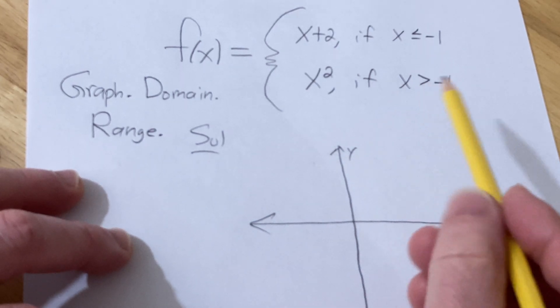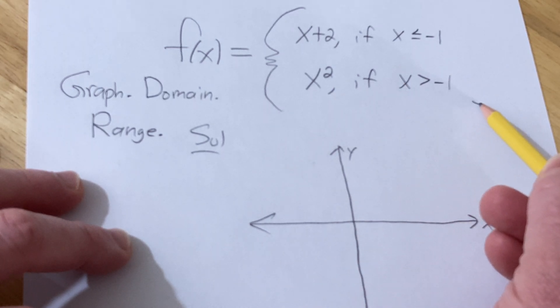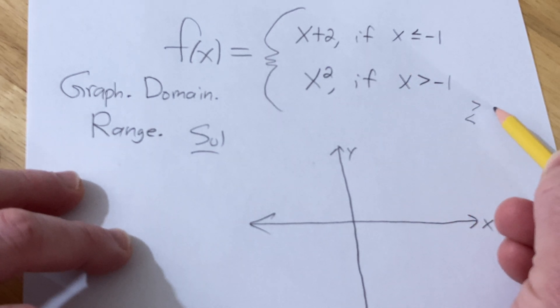Okay so let's go ahead and graph this one first, the bottom piece. Whenever you have a less than or a greater than and you're graphing a piecewise function, initially you're going to have a hole. Whenever you have less than or equal to or greater than or equal to, it's going to be solid, a filled in hole.